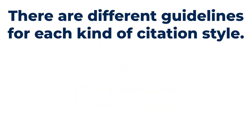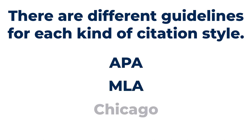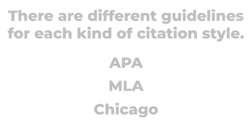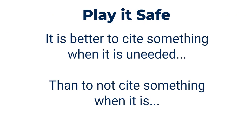There are different guidelines for how to include in-text citations, and they depend on whether you are following the APA, MLA, or Chicago formats. Playing it safe by adding in-text citations, even when you're not sure if one is needed, is a good preventative measure. It's always better to cite something when it's unneeded than not cite something when it is.